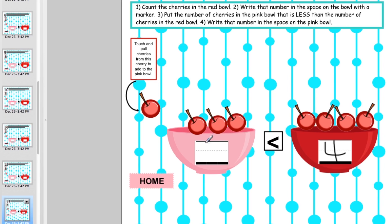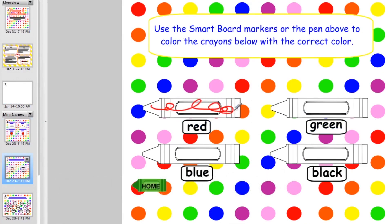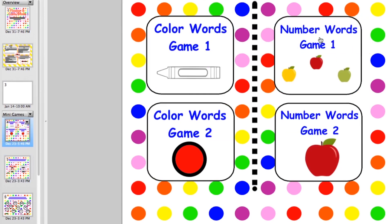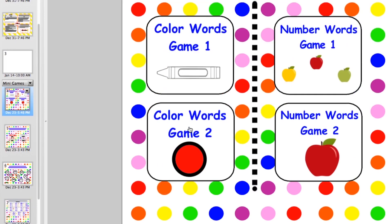This color number words game has four different activities. In the first they just color the different crayons according to the color word. Then in the second game they count the apples and click on the correct number word. If they click on the right one it will dance. If they click on the wrong one it won't move at all.